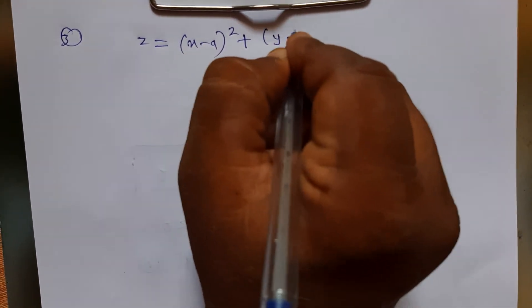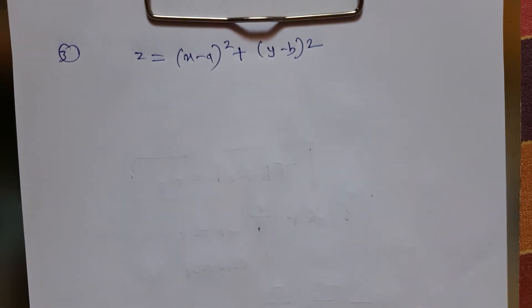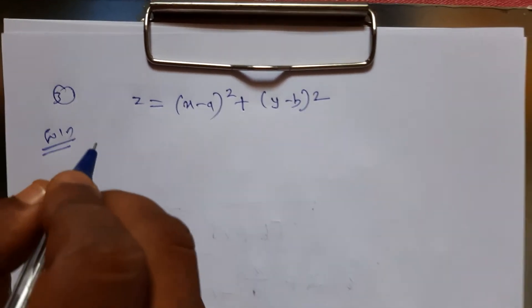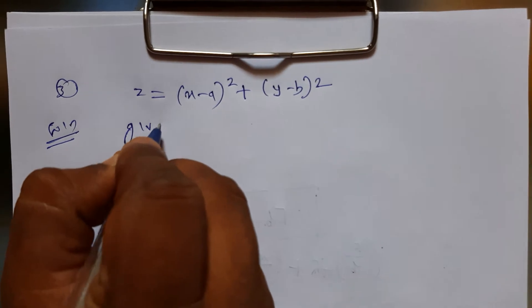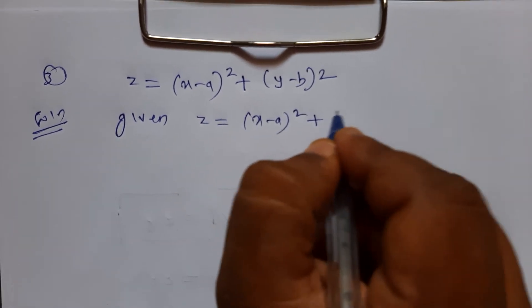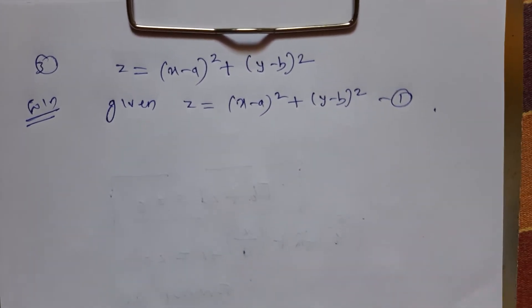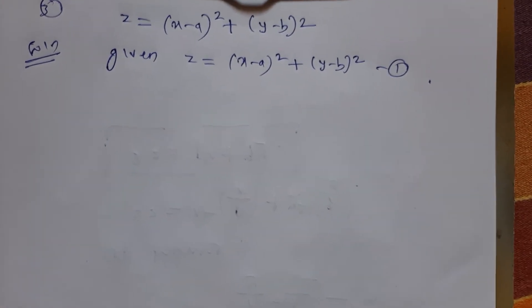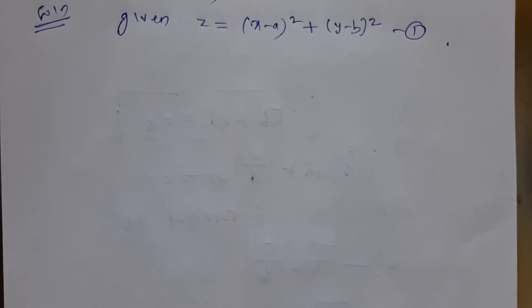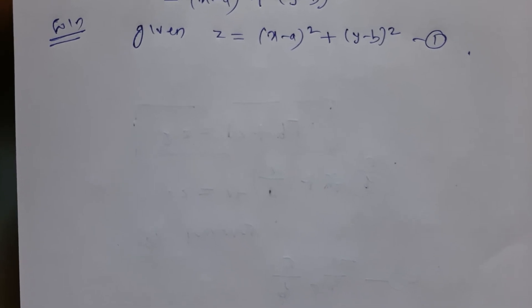We take one more example: form the PDE for z = (x - a)² + (y - b)². Here also, the number of independent variables is 2 (x and y) and the number of arbitrary constants is 2 (a and b), so it involves a first order differential equation. Similar to the previous example, I will differentiate equation number 1 partially with respect to x.